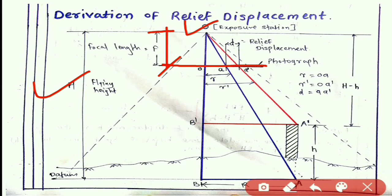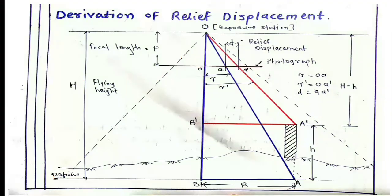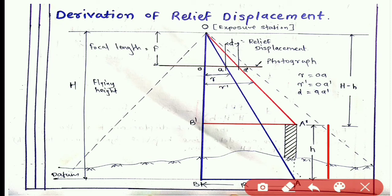Capital H is the flying height, that is the vertical distance between the exposure station and the datum. You can see this is the datum. Now let capital A be the position of the bottom of the object at the datum, and small h be the height of the object above the datum, such that the height of the top of the object below the exposure station will be capital H minus h.